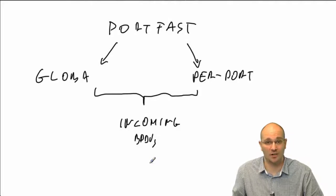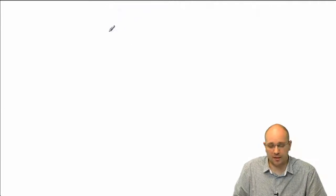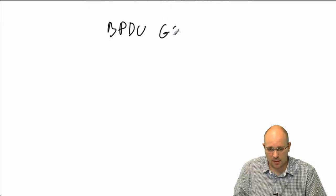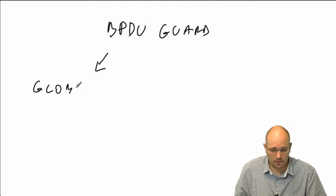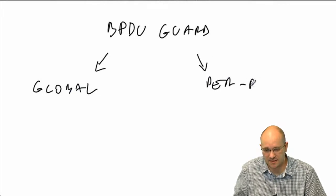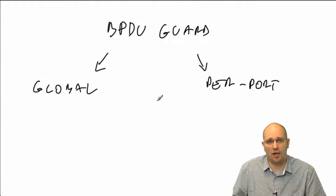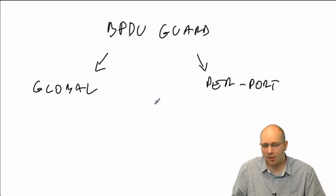Portfast will be operationally disabled. BPDU guard can also be configured using two different methods — it can be configured globally or on a per-port basis. In both cases, BPDU guard is going to supersede the Portfast.